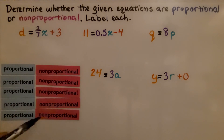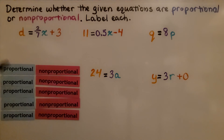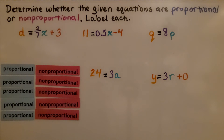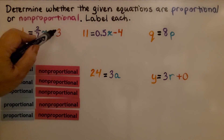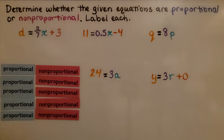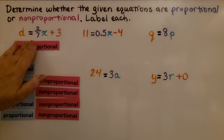Here we have our proportional and nonproportional labels again. Determine whether the given equations are proportional or nonproportional. Remember: if the y-intercept equals zero, it is proportional; if it's not equal to zero, it's nonproportional. The first one has a plus 3, so the y-intercept b is not equal to zero — this is nonproportional.